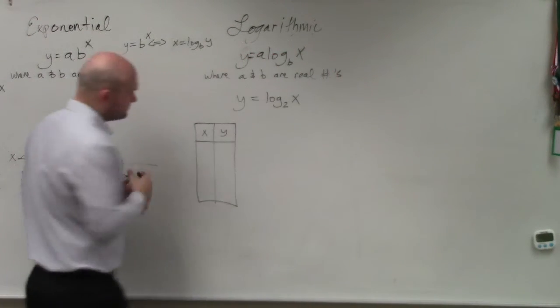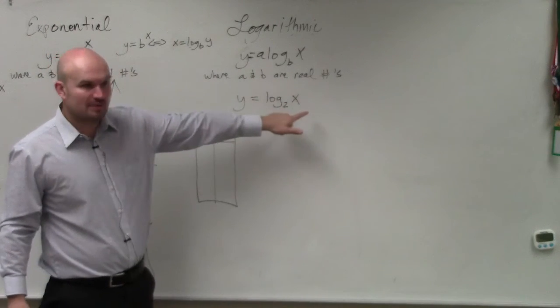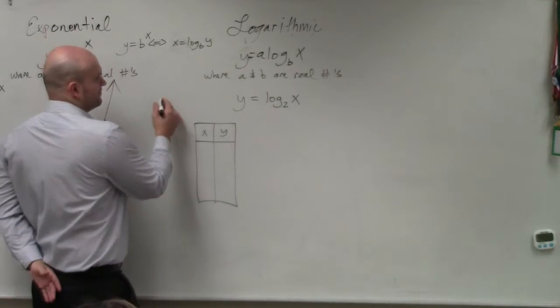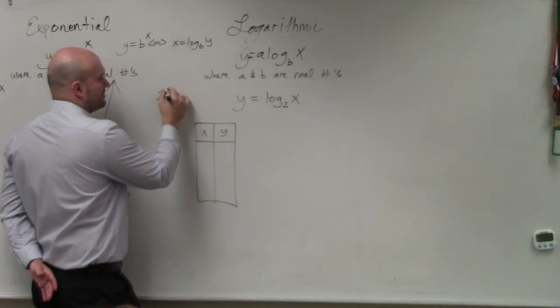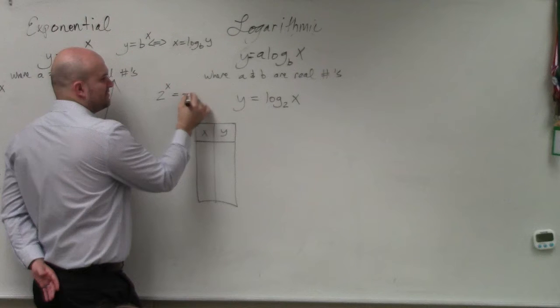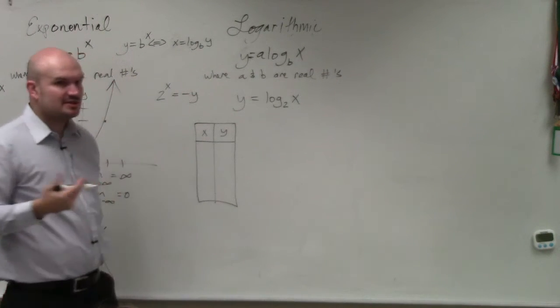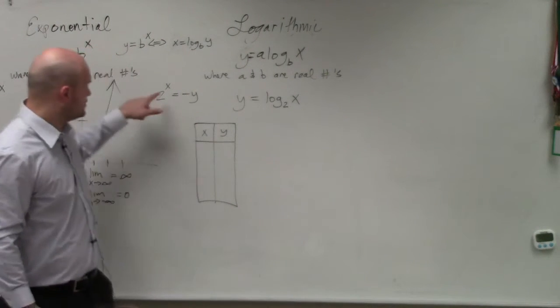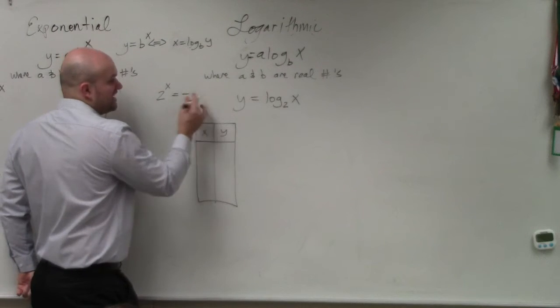However, the logarithmic function has a little issue. Because what this is saying is 2 raised to what power gives you x? Well, the issue is if x is negative, think of a number where this is going to give you any kind of negative number. The problem is there is no number that exists where you can take 2, raise it to a power that's going to give you any negative number.